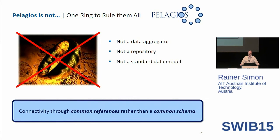The idea is that everybody is free to express their data in whichever way they like, but when they make a reference to a place they should do so using URIs. Pelagios is exactly based on the idea of using URIs to refer to entities, and since Pelagios is about place, we're speaking specifically about place URIs.